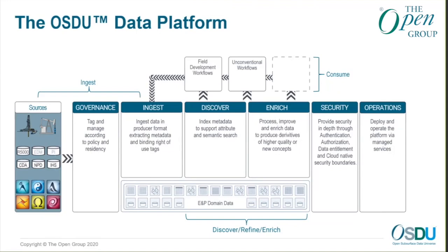Ingestion is about teasing apart the data, extracting the structure, but preserving it in source form. Enrichment is the sequence of transformations necessary to bring the data into a consumption-ready format. Across all of this we need to think about authentication — of the calling app or service — and authorization, or data entitlements, to make sure only the right person receives the data. The tags put in at ingest are verified at the point of access. If there are TCC embargo or other legal considerations for access, those are enforced at the point of access. The last piece is operations — how we deploy, keep the environment refreshed, monitor, and secure.